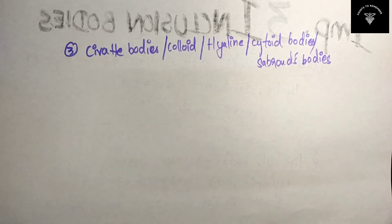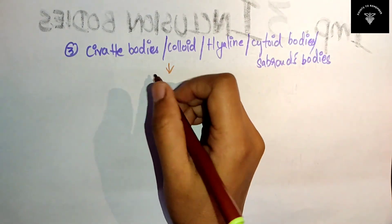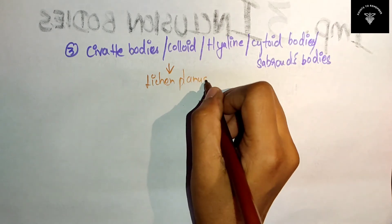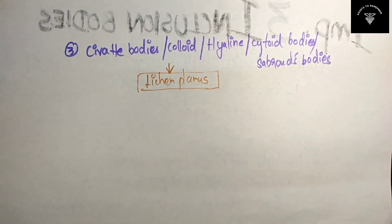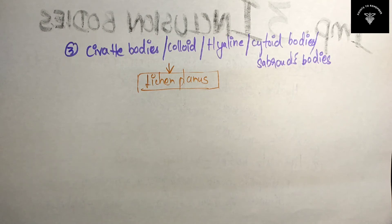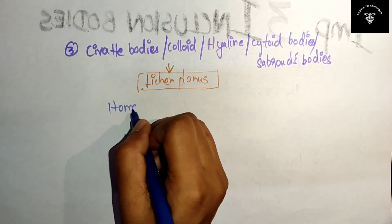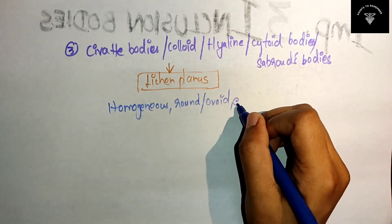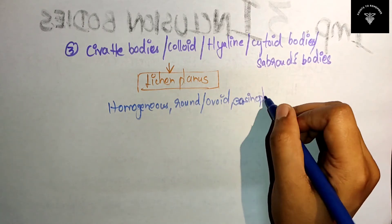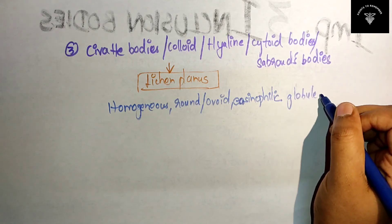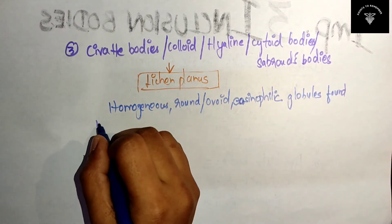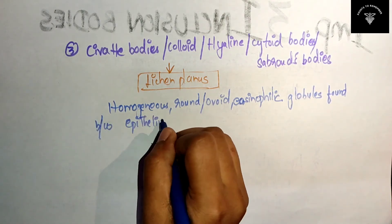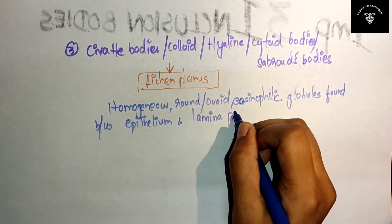Where can you find Civatte bodies? They are seen in lichen planus. Civatte bodies are homogeneous, round or ovoid, eosinophilic globules. They are found between the epithelium and the lamina propria.